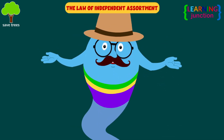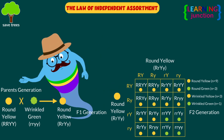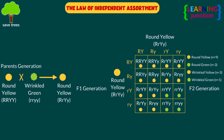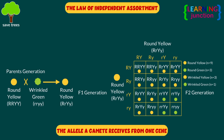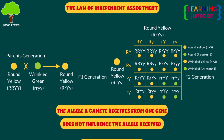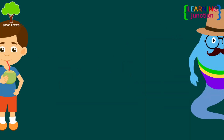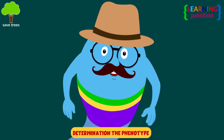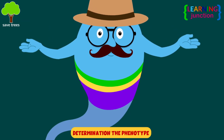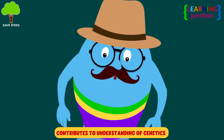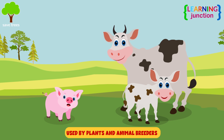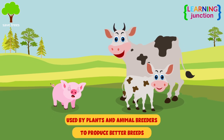The third is the law of independent assortment. It states that the alleles of two or more different genes get sorted into gametes independently of one another. In other words, the allele a gamete receives from one gene does not influence the allele received from another gene. Mendel's laws allow you to understand how a character is inherited and what determines the phenotype that different individuals acquire. Mendel's laws are also vastly used by plant and animal breeders to produce better breeds.